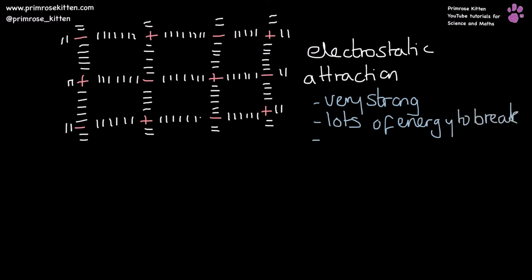Which is why ionic compounds have a high melting point and a high boiling point. Because you need to put a large amount of energy from heat in there to break the electrostatic attractions, the ionic bonds.